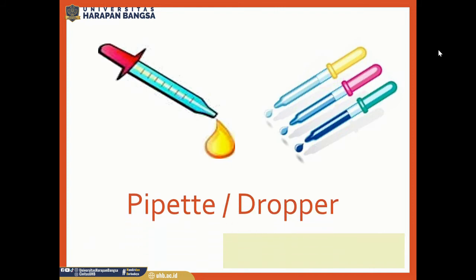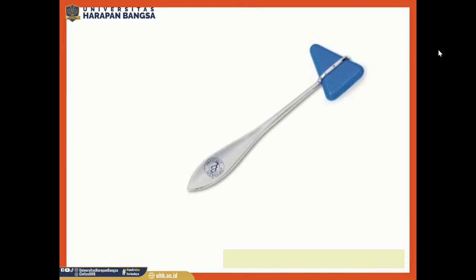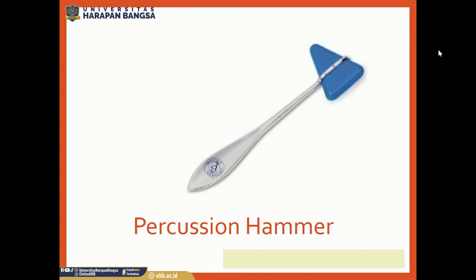This is a pipette, or this is a dropper. Pipette or dropper is for taking and dropping fluid. This is a percussion hammer. Percussion hammer is for striking parts of the body.